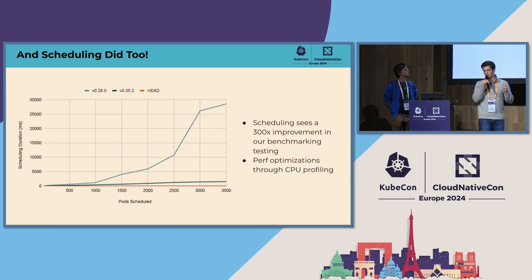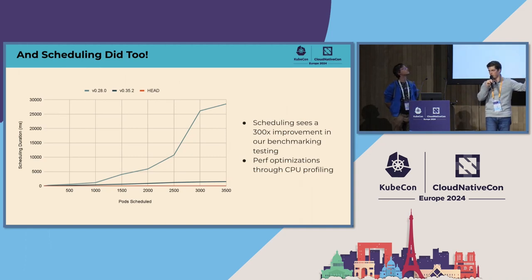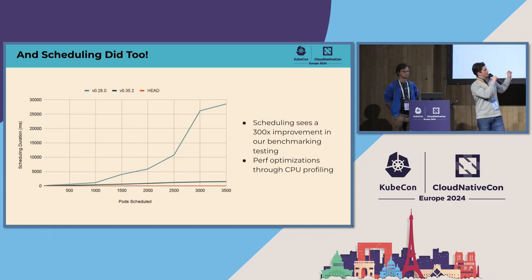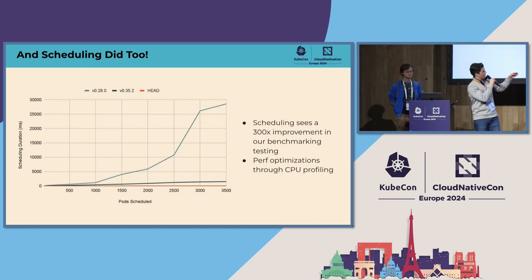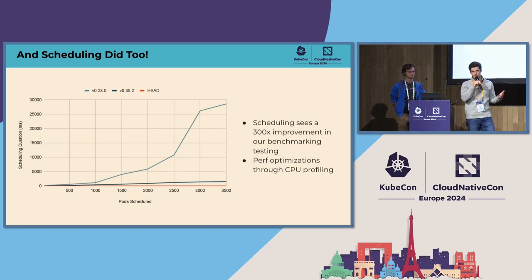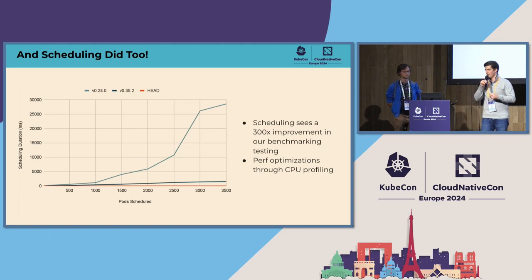Scheduling got quite a bit better over the last six months. We did a lot of CPU profiling work on scheduling performance. At v0.28, with 3,500 pods in our benchmark we were looking at about 30 seconds. That was cut to about 1 second on v0.35.2. On the current head, after some more improvements over the last 20 commits, it's now about 10 milliseconds at that scale. We effectively cut scheduling time by around 300 times — not all pods have anti-affinity constraints, but still a major improvement.